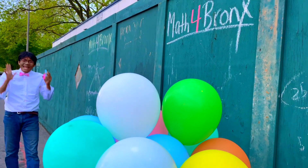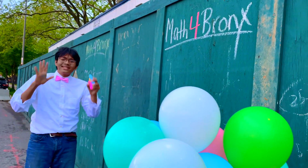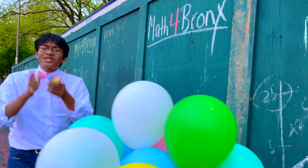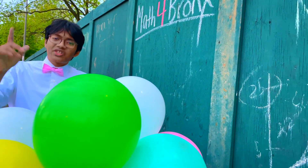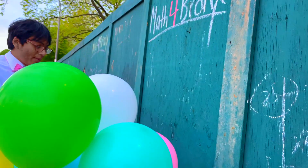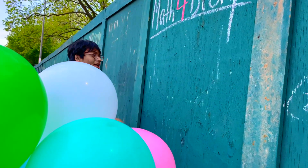Folks, welcome back to the next episode of Math for Bronze. Today, we're going to start with a square and find the area of a square inscribed in a square. Let's go ahead and check it out.